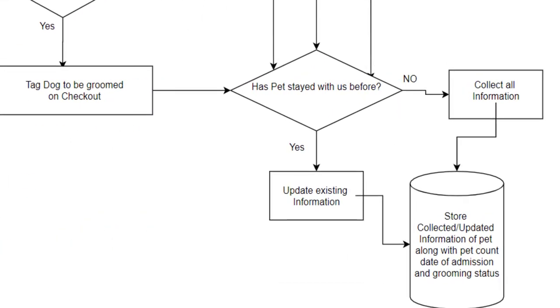So if they say yes to grooming, they'll come down here to tag dog to be groomed on checkout. This is a process. So that's the shape of a rectangle. And then from there we come over to the final decision.